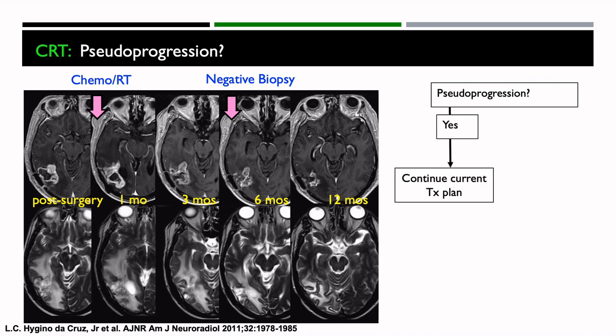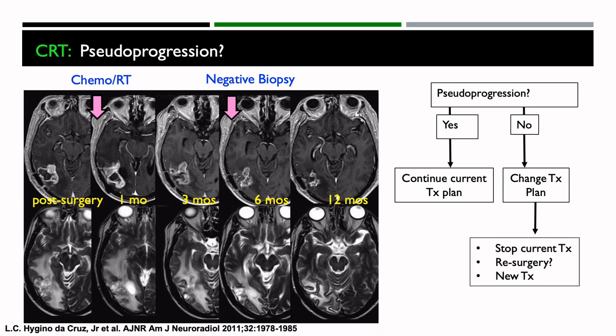Specifically, if you could confirm that it is pseudoprogression, then you continue the current treatment plan — it's probably going to work. If it's not pseudoprogression, then you might want to change the treatment plan, stop the current treatment, go back to surgery, or start a new treatment. So having some measure of whether it's tumor versus treatment effect is greatly important. And also this knowledge is really important in order to enroll patients on clinical trials.